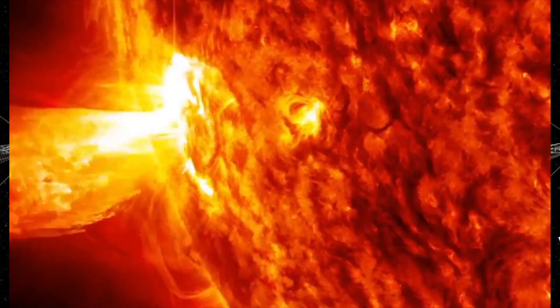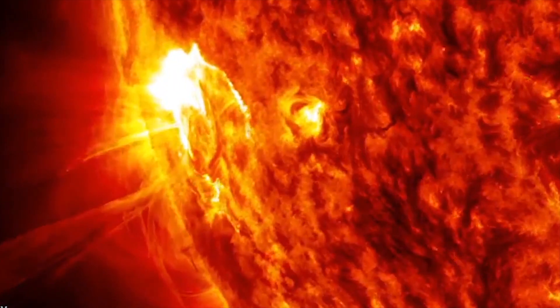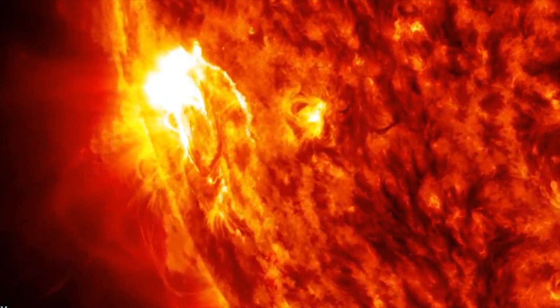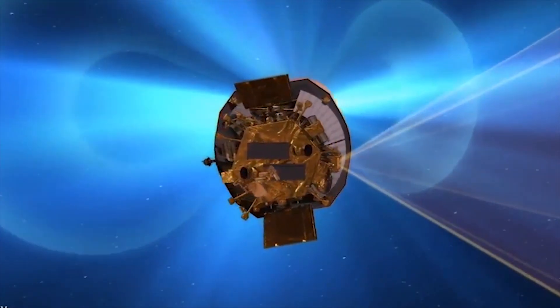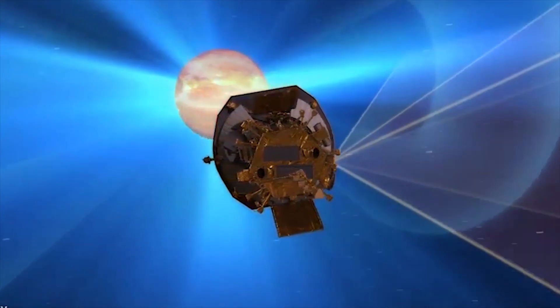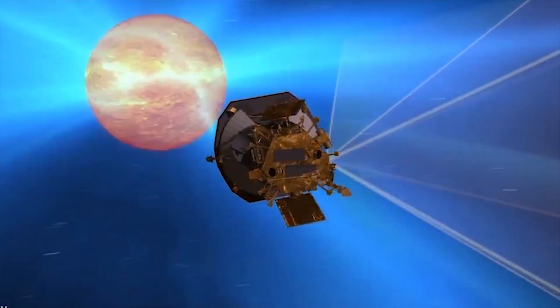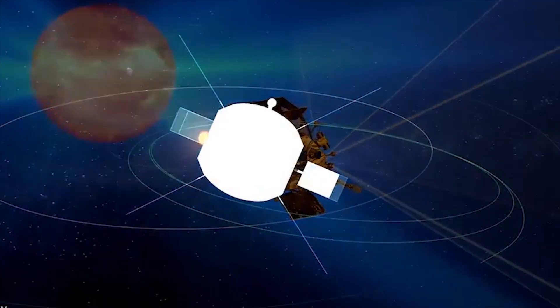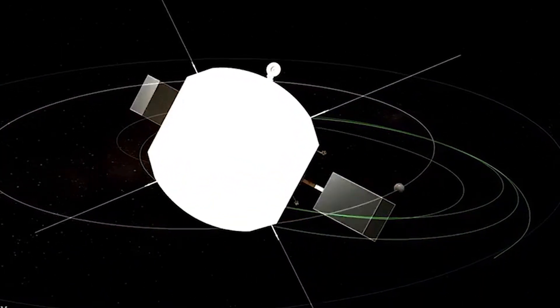It has to face the extreme temperature of the sun's corona, about 1,377 degrees Celsius, along with extreme solar wind. So NASA included a solar shield of 4.5 inches thick, made up of reinforced carbon-carbon composite.